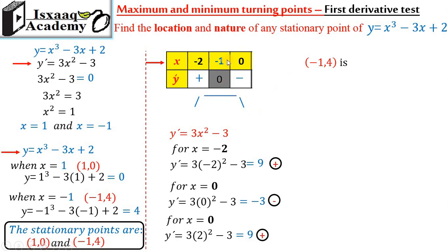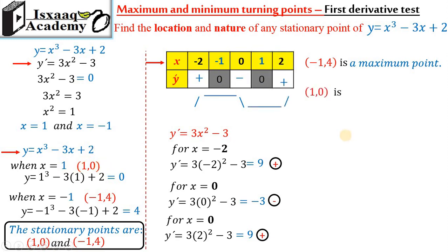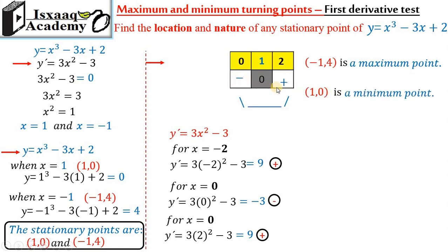Negative 1 is positive, then negative — positive to negative is the maximum. We already have the x and the check values. Negative 2 is negative, negative 2 is positive — this is negative. This is the maximum; we have this as the minimum.